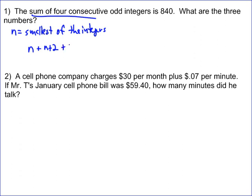Then the next one, n plus 4. If you started with 3, the 2 away is 7, which is adding 4. And then the last one is n plus 6. And then that's going to equal 840.